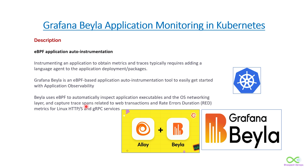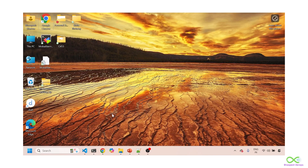For this, you need: first, a working application; second, Beyla to do the auto instrumentation; and third, an agent to capture the data — in this case we'll be using Alloy. So Alloy plus Beyla is a deadly combination, and Alloy will send all the metrics and traces to the LGTM stack, which in this case will be Grafana Cloud. We'll divide this use case into four categories. I've also created a GitHub page for this — the URL will be in the video description.